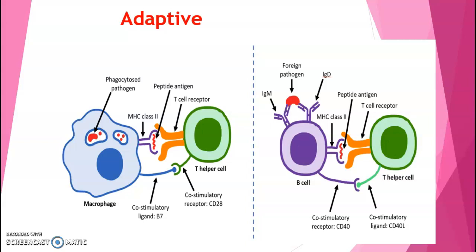Innate immunity, or non-specific immunity, is the defense system which you are born with; it protects you against all antigens. Innate immunity involves barriers that keep harmful materials from entering your body, and these barriers form the first line of defense.